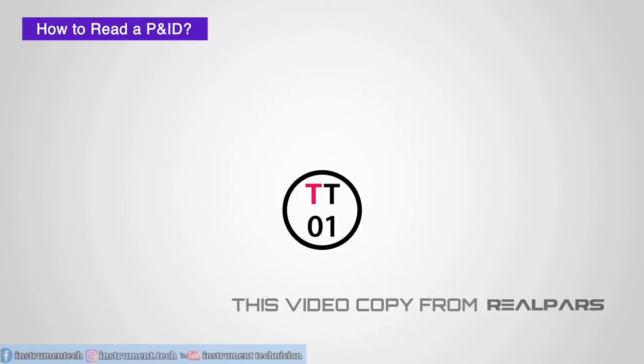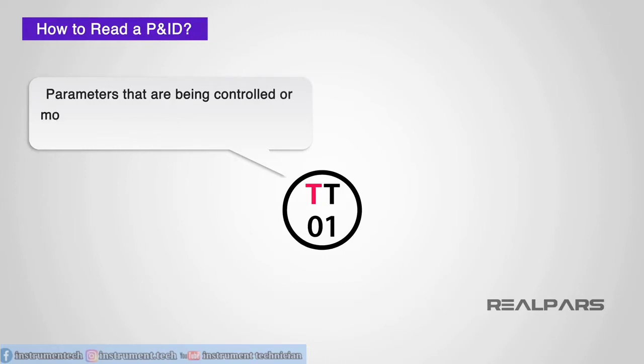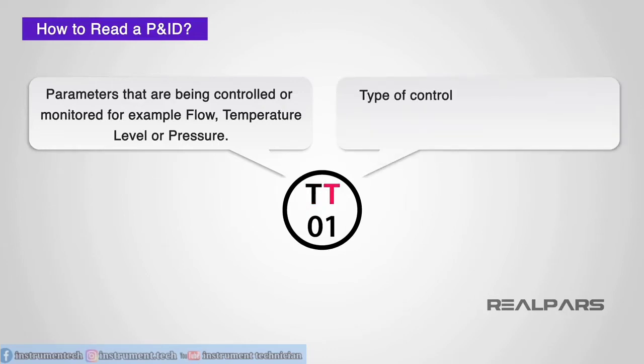The first letter of the code identifies the parameters that are being controlled or monitored, for example: flow, temperature, level, or pressure. The next letter is used to define the type of control device being used, for example: transmitter, valve, or controller.